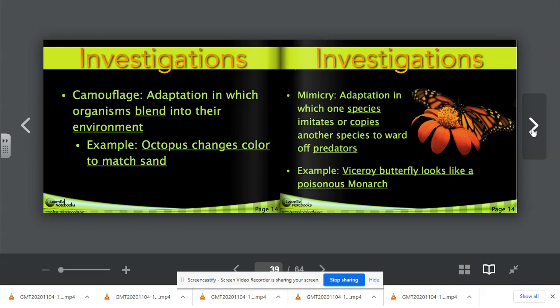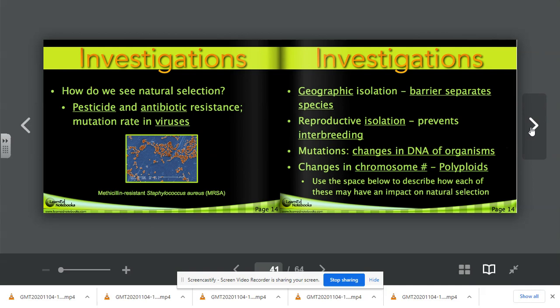Another example of camouflage would be mimicry. Mimicry is an adaptation in which one species imitates or copies, mimicking another species to ward off predators. For example, this viceroy butterfly looks like a poisonous monarch butterfly. Organisms have the ability, animals that would eat a butterfly, know to stay away from bright colors such as this orange. It's in their genes to beware the color orange. The viceroy butterfly is not at all poisonous, but it benefits from the reputation of the monarch butterfly. How do we see natural selection? Pesticide and antibiotic resistance, mutation rate in viruses. Those are all examples of natural selection.